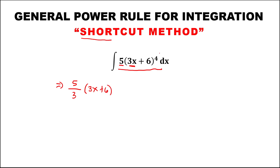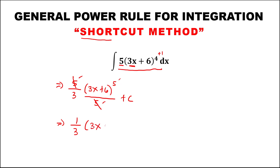For the exponent, add 1, so to the power 5. Then the denominator must be equal to this exponent, so over 5, plus C. To simplify, since we have 5 in the numerator and 5 in the denominator, we can cancel, and this equals 1 over 3 times (3x + 6) to the power 5, plus C.